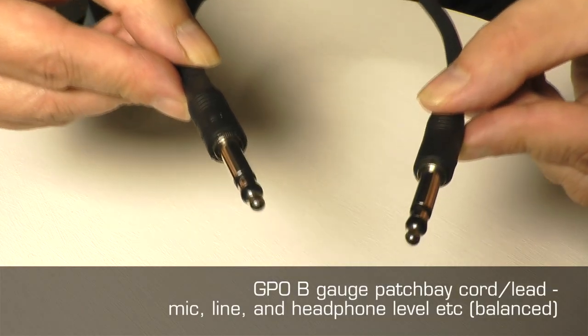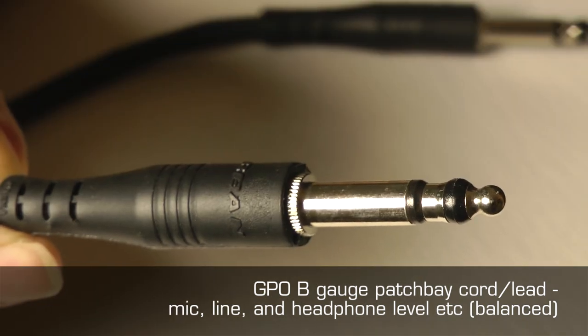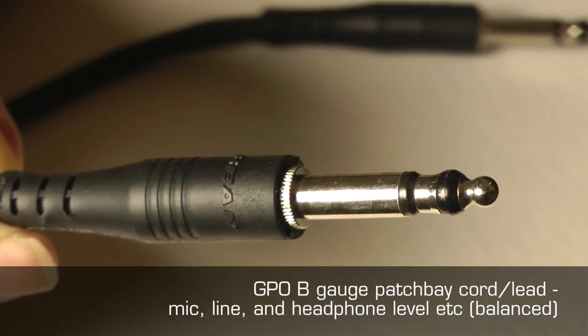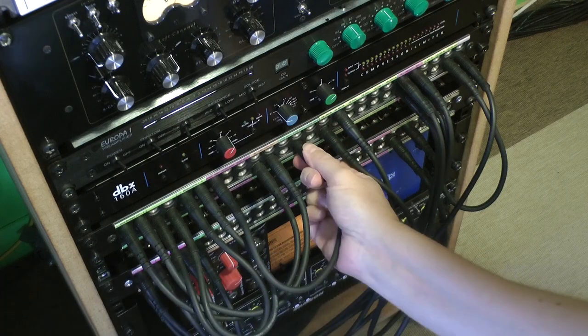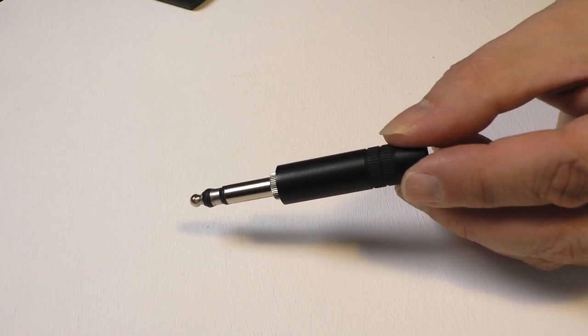This is a GPO B-gauge patch bay cord lead. It can carry line and mic-level electrical signals. It's balanced, and as you can see, it's male-to-male B-gauge GPO jacks at each end.